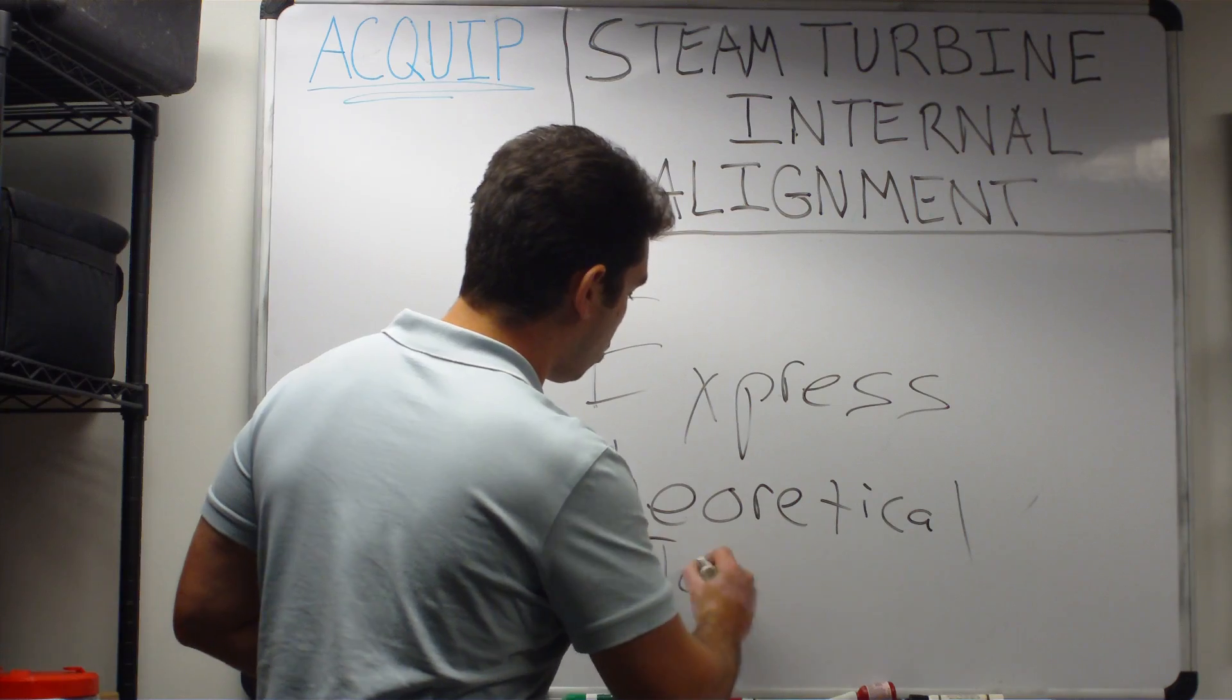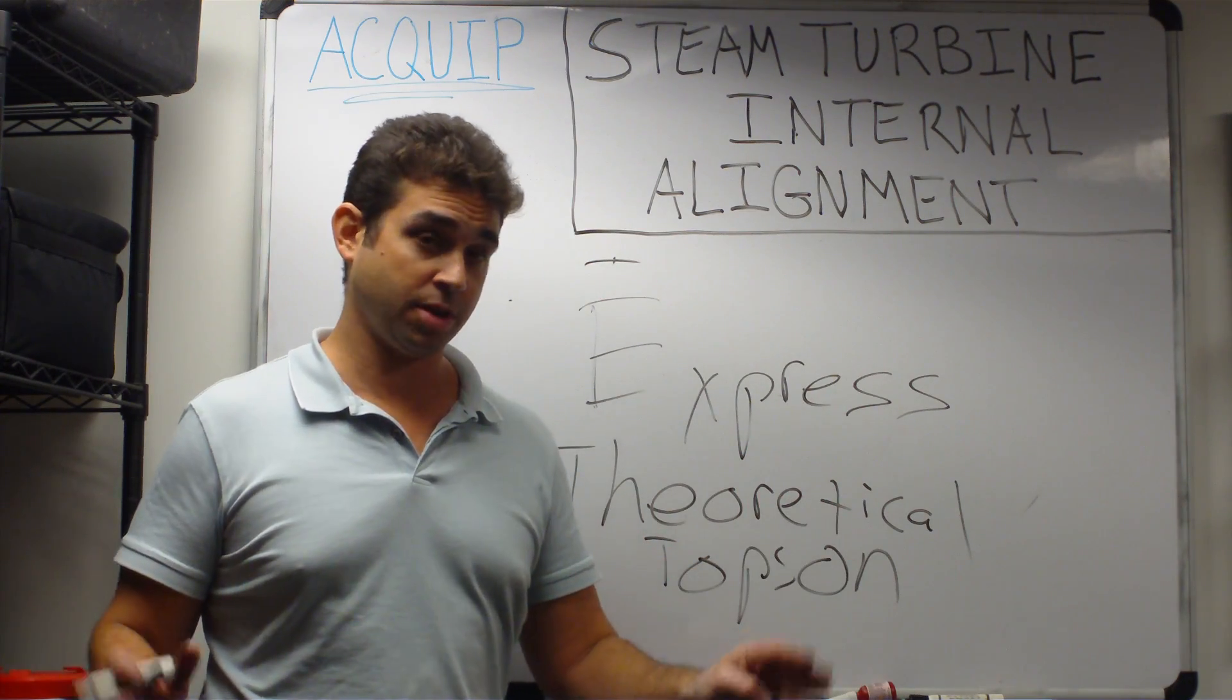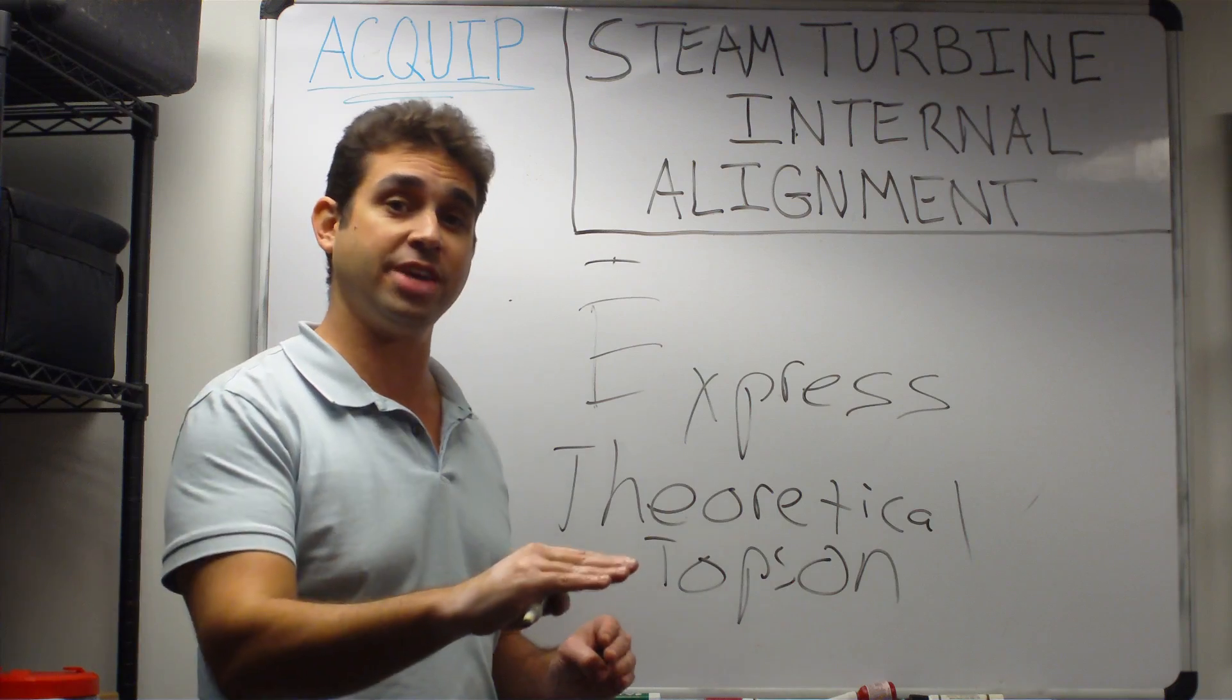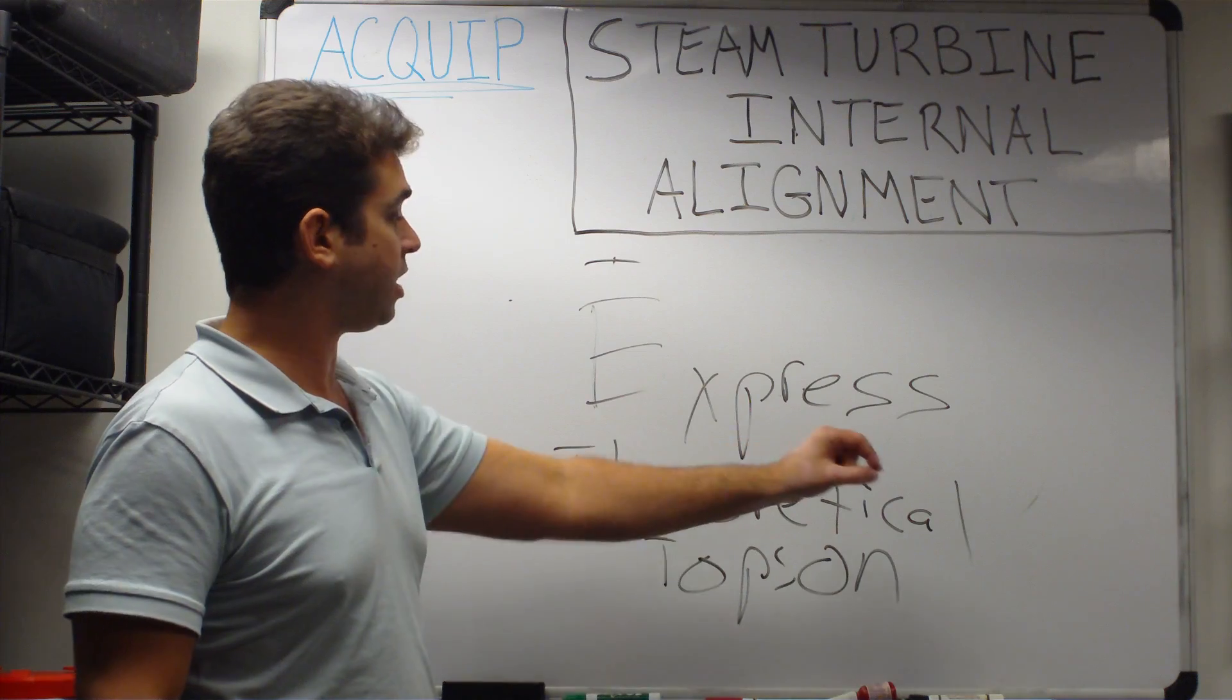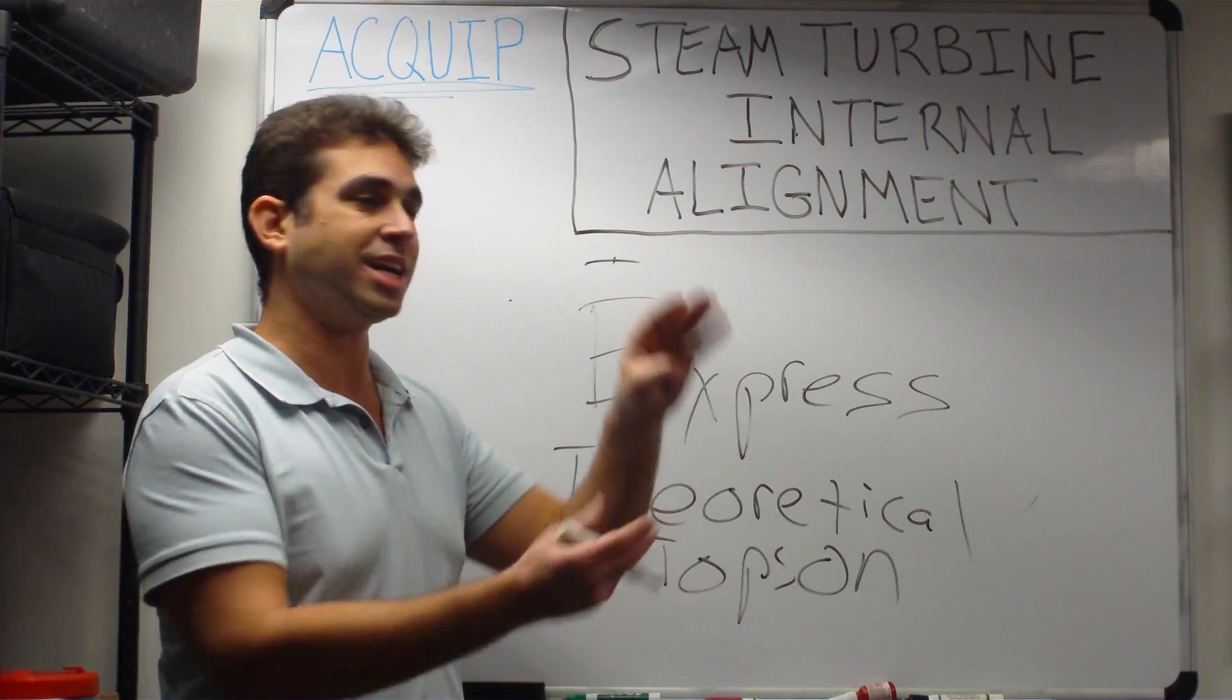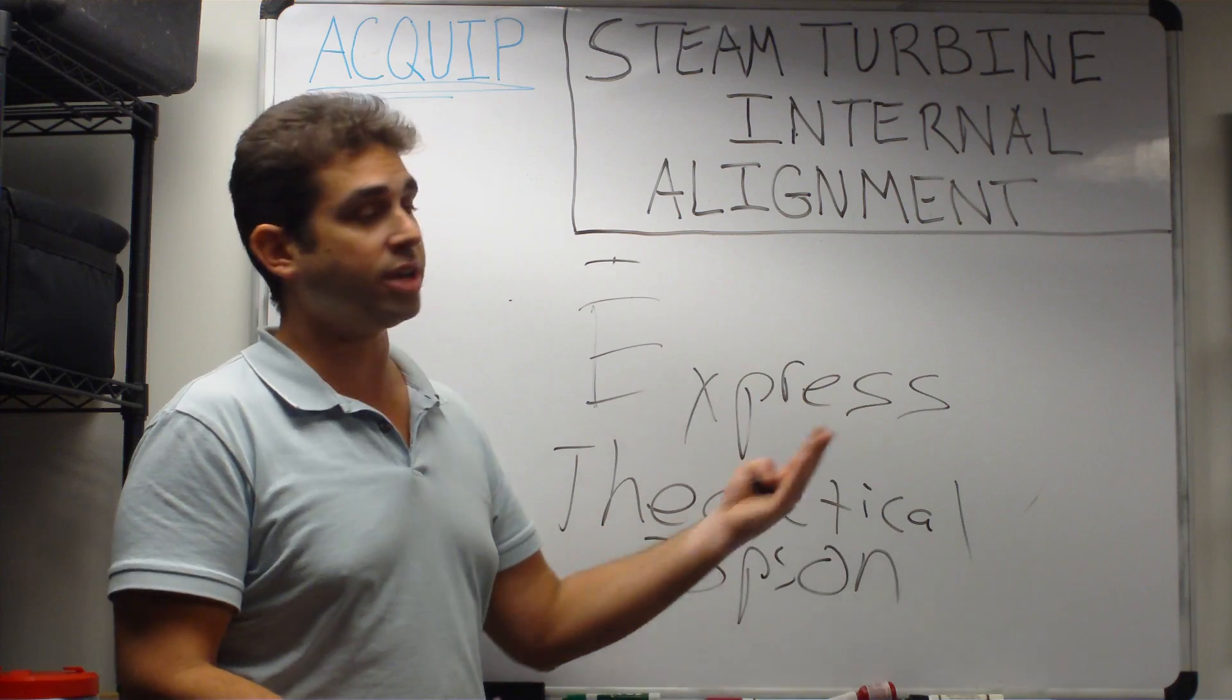because what we're going to do in this type of alignment is only take tops off readings, but we're going to calculate the outer roundness, we're going to calculate the horizontal joint deviation, we're going to take actual rub measurements on any of the diaphragms, and any of the packing that's in, and any of the seal strips, and we're going to calculate where the turbine was running with the top on without actually putting the top on.